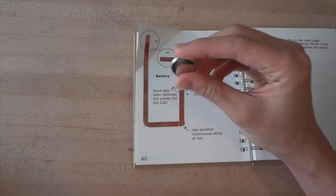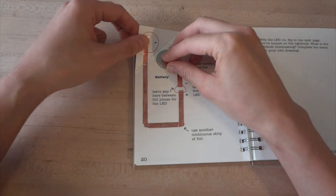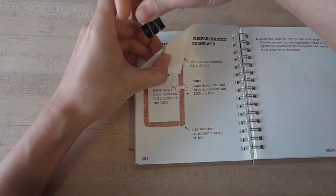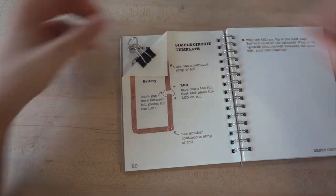Next, we'll add our battery, which is going to power our circuit. Place it plus side up to match the circles on the template. Fold your corner down over and clip your battery in place with the binder clip.